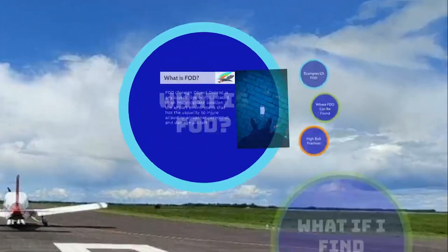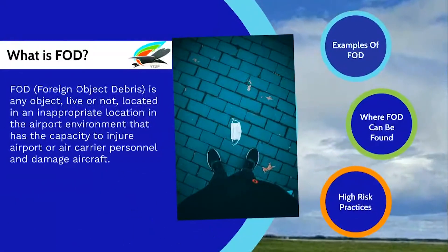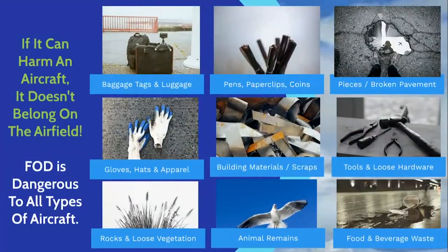So what is FOD? FOD, or Foreign Object Debris, is any object, live or not, located in an inappropriate location in the airport environment that has the capacity to injure airport or air carrier personnel and damage aircraft. If it can harm an aircraft, it doesn't belong on the airfield.